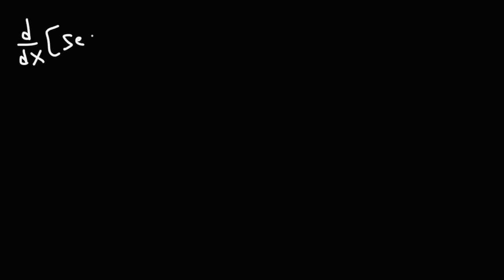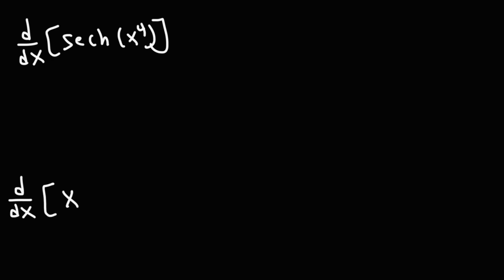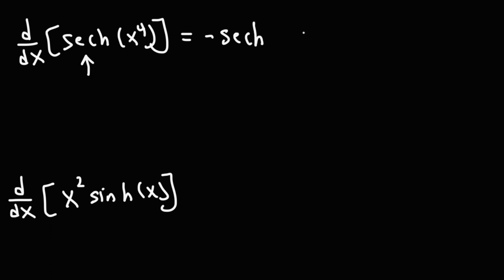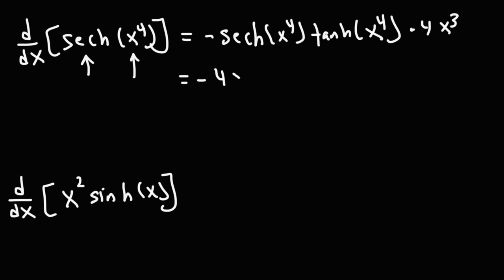Now find the derivative of hyperbolic secant of x to the 4th. We use the chain rule. The derivative of hyperbolic secant is negative hyperbolic secant times hyperbolic tangent. So we get negative hyperbolic secant(x⁴) times hyperbolic tangent(x⁴), then multiply by the derivative of x⁴, which is 4x³. The final answer is negative 4x³ hyperbolic secant(x⁴) times hyperbolic tangent(x⁴).